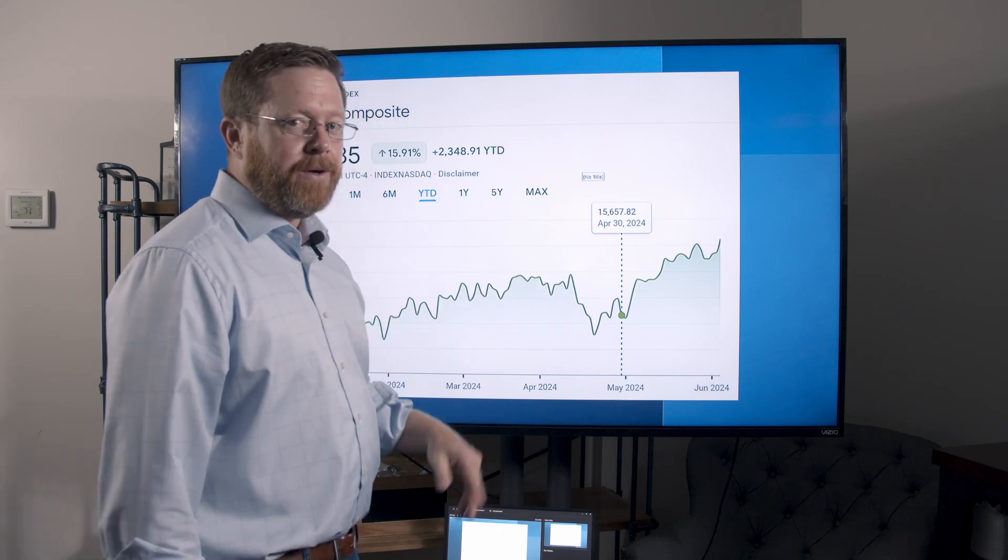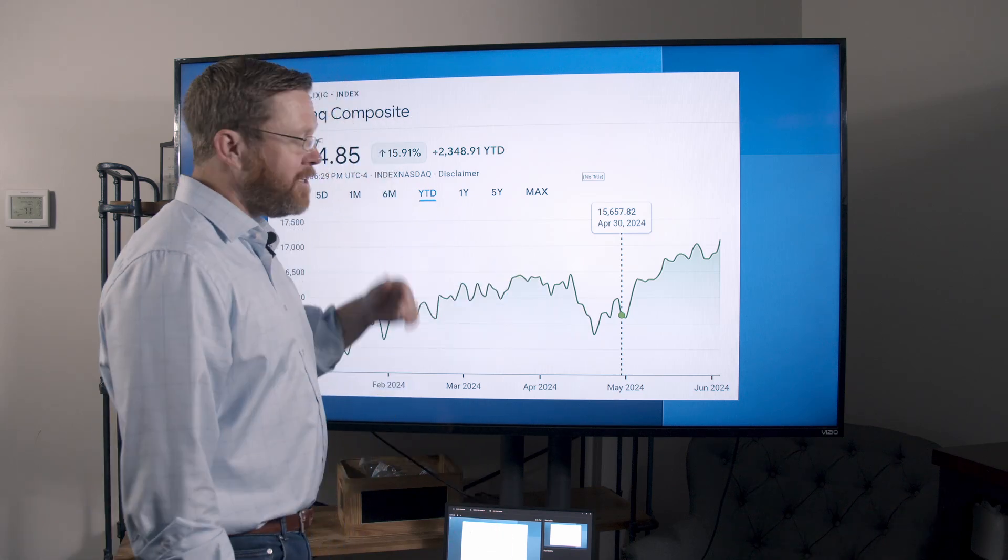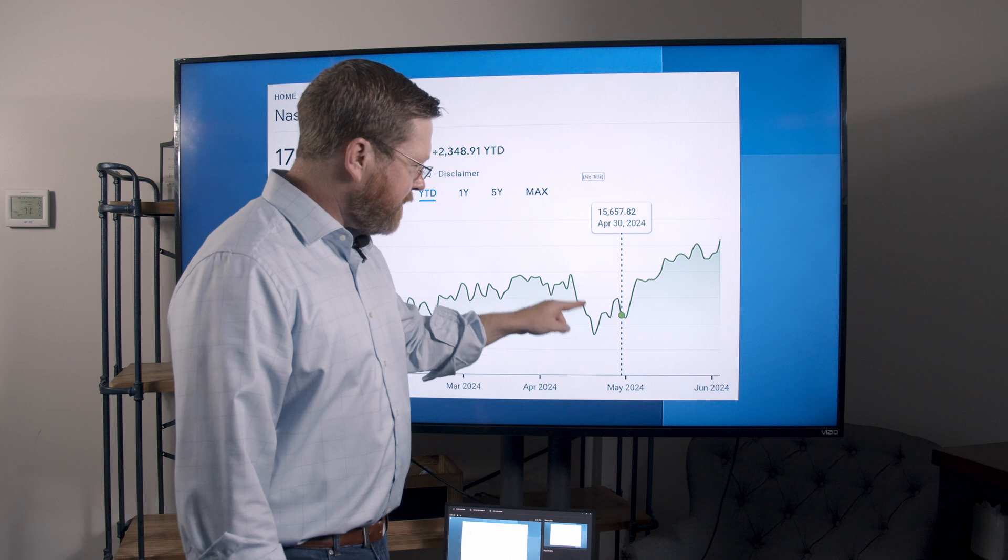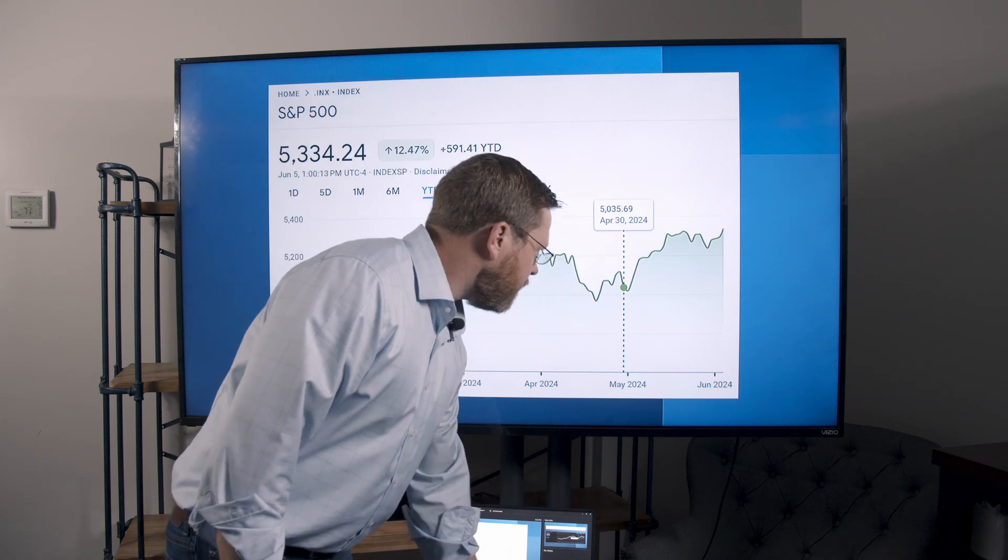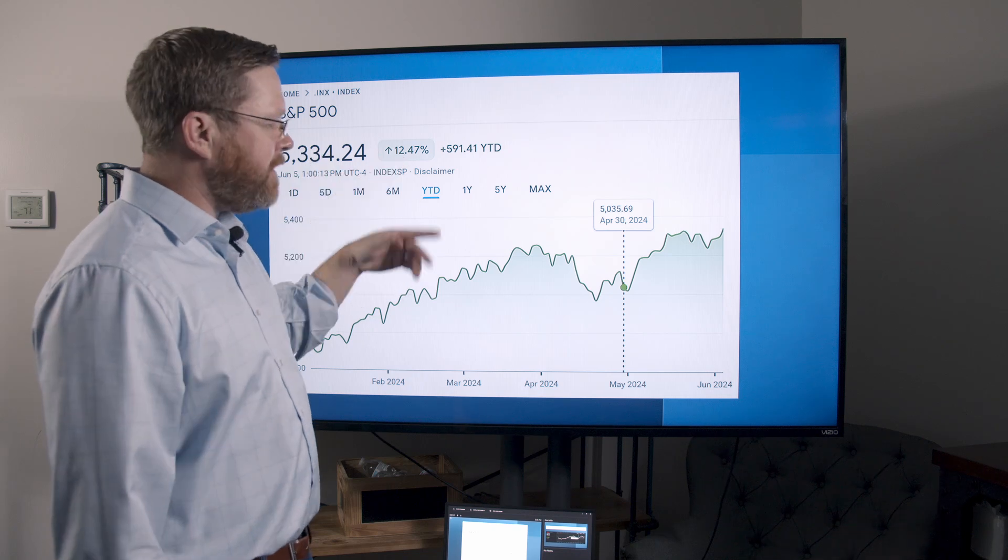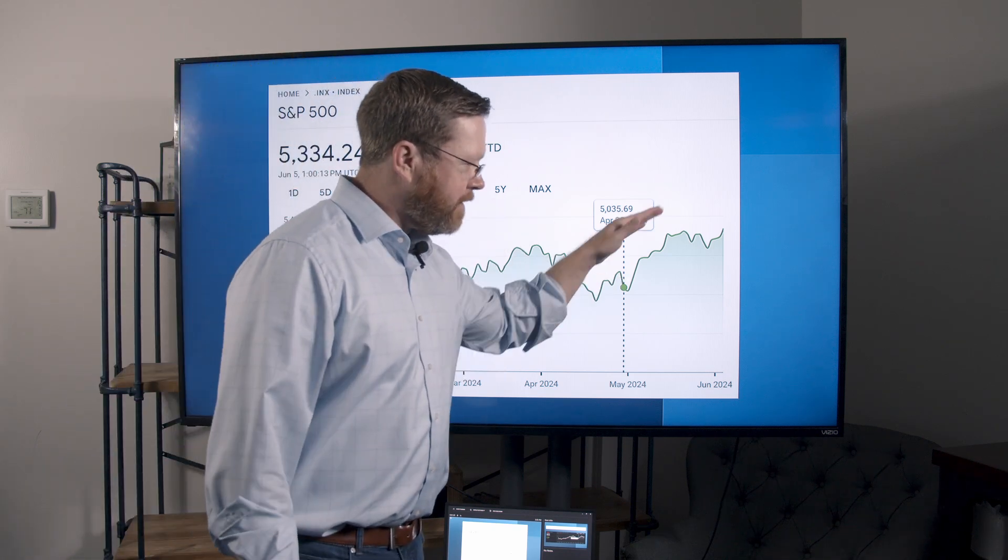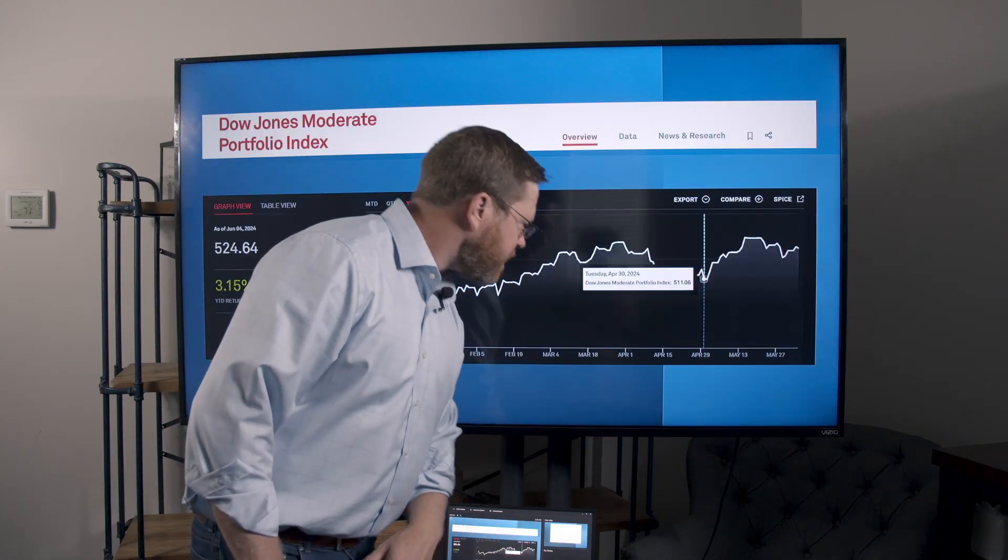April was a really rough go, and this is NASDAQ, of course. Still up almost 16% on the year, but that scared everybody to death. We'll cover what's going on there. Same thing, S&P up 12, big drop, big recovery in the month of May, which you'll see next month.